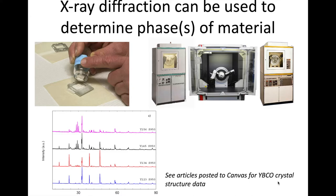I posted some articles to Canvas in the supplemental reading section that talk about the YBCO crystal structure data. This particular reference looks at different XRD patterns for different processing conditions and what the structure is. We're going to use it to compare — is our pattern similar to this blue pattern or similar to the fuchsia pattern? That's the level we want to achieve: comparing similarities and differences between our recorded patterns and those in the literature to see what that tells us about the phase or phases present.